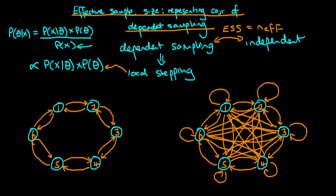The bigger the difference between the actual sample size from our dependent sampling routine and the effective sample size, the more inefficient our sampling algorithm is relative to an independent sampler. To introduce this concept more fully, I want to use an example — that of a Markovian die.